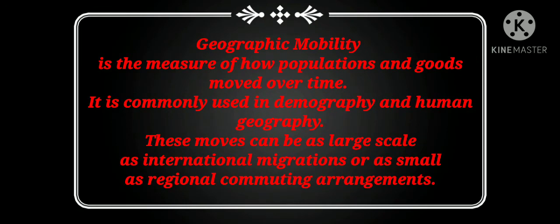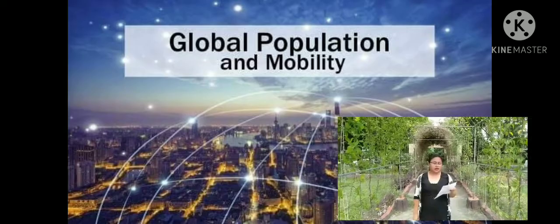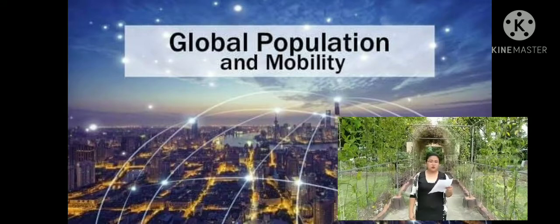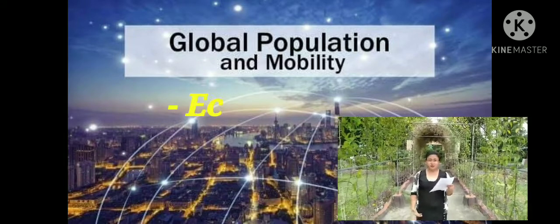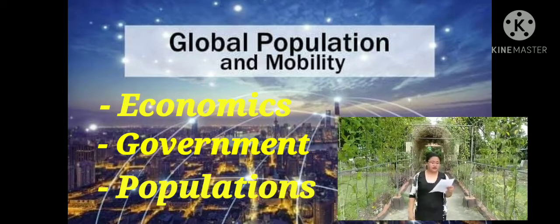Geographic mobility is the measure of how populations and goods move over time. It is commonly used in demography and human geography. These moves can be as large a scale as international migrations or as small as regional commuting arrangements. Our world is getting smaller and smaller as people deal with so many changes in terms of economics, government, and populations that brought each country into its development because of globalization.